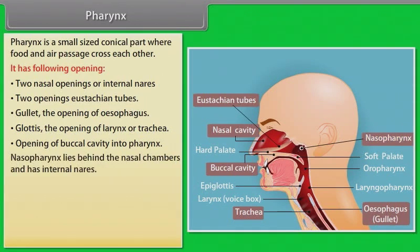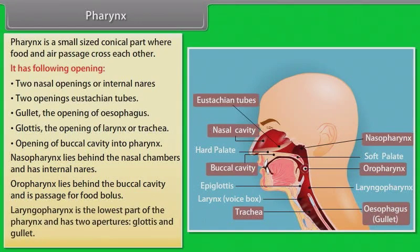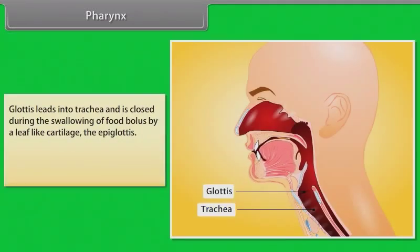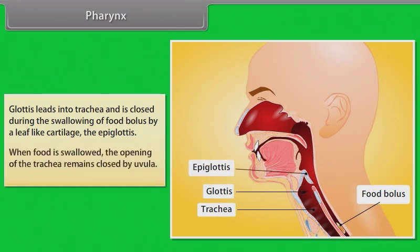The nasopharynx lies between the nasal chambers and has internal nares. The oropharynx lies behind the buccal cavity and is the passage for the food bolus. The laryngopharynx is the lowest part of the pharynx and has two apertures: the glottis and the gullet. The glottis leads into the trachea and is closed during swallowing of the food bolus by a leaf-like cartilage called the epiglottis. When food is swallowed, the opening of the trachea remains closed by the uvula.